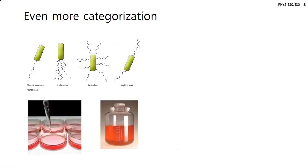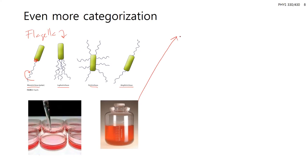Bacteria can also be categorized by their flagella type — flagella are protein rods with a protein motor at the membrane that rotate and propel the bacteria. Based on where the flagella are located, different terminology applies. That's another categorization method for bacteria.